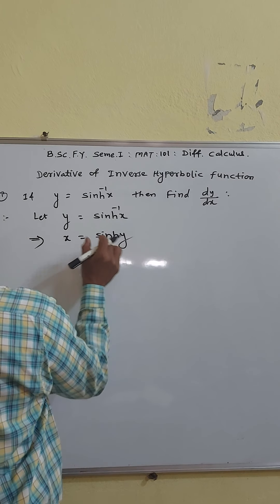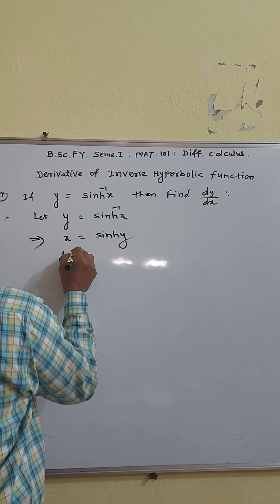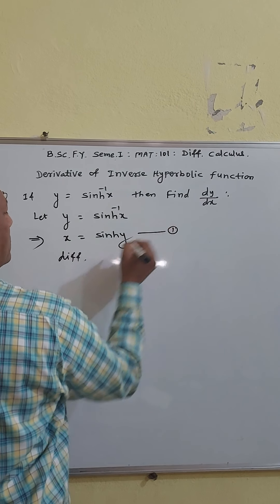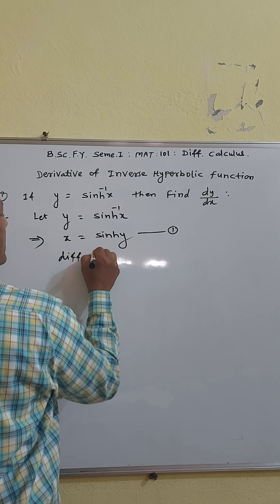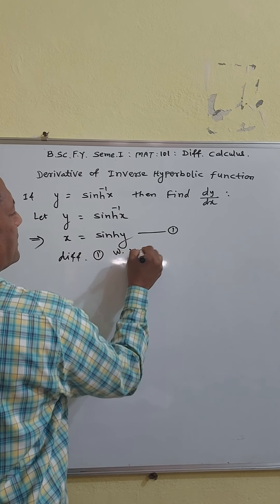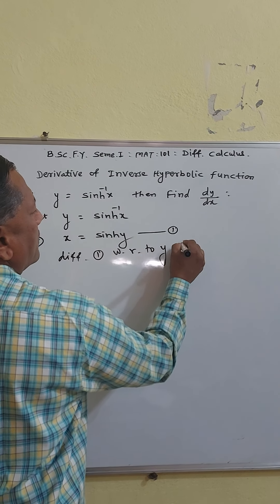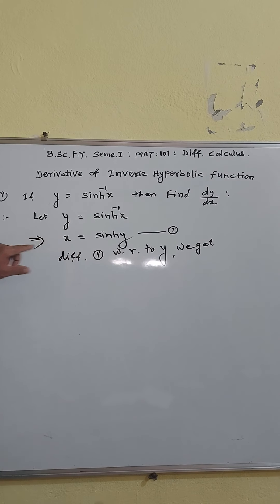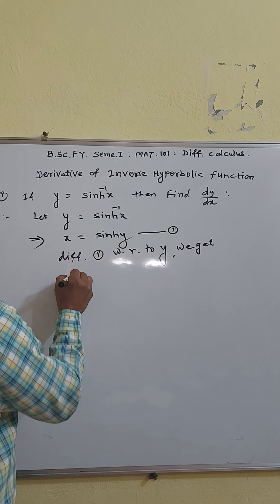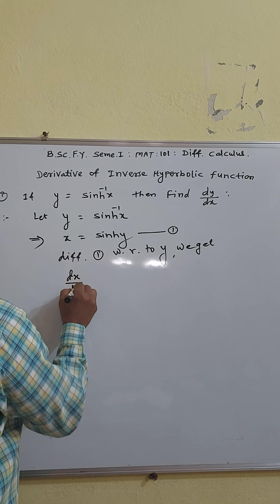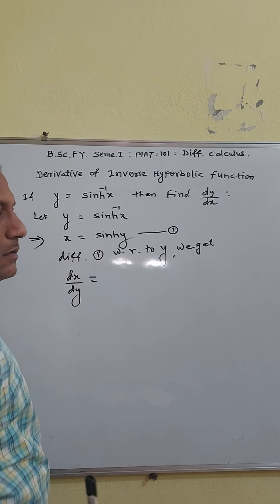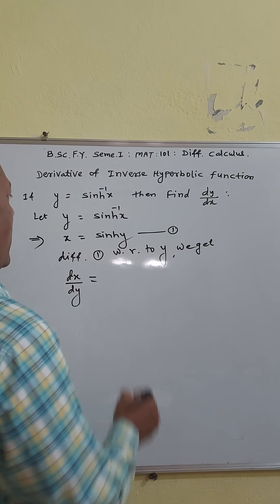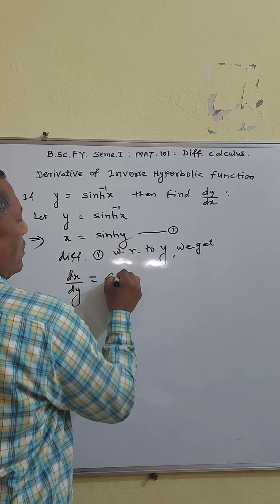Differentiate this with respect to y. Call this equation 1. Differentiating equation 1 with respect to y, we get: dx/dy is equal to the derivative of sinh y with respect to y, which is cosh y.